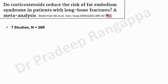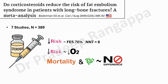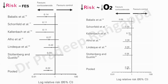Digging into the literature on steroids, evidence predominantly comes from case series and case reports. One meta-analysis — published in a Canadian journal — looked at seven studies with 389 patients and found that steroids reduced the risk of fat embolism by 78%, with a number needed to treat of 8. Steroids also reduced the risk of hypoxemia. There was no difference in mortality or infection rates with steroid use. The forest plot confirmed a significant role for steroids in reducing the risk of fat embolism syndrome in patients with long bone fractures.